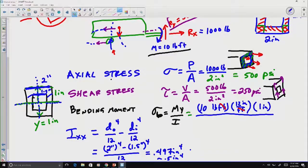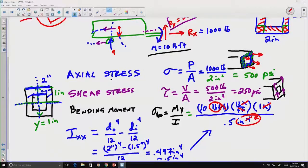If I plug that in down here, 0.5 inches to the fourth, you'll notice we have an inch on the top, another inch on the top, and we can cancel out those two with two of these, and our final answer is going to be in pounds per square inch. Well, 10 times 12 divided by 0.5 is going to give us a value of 240 psi.